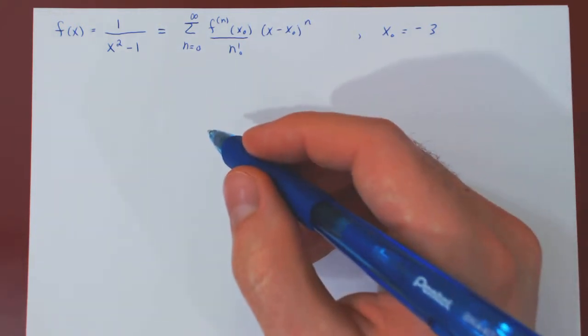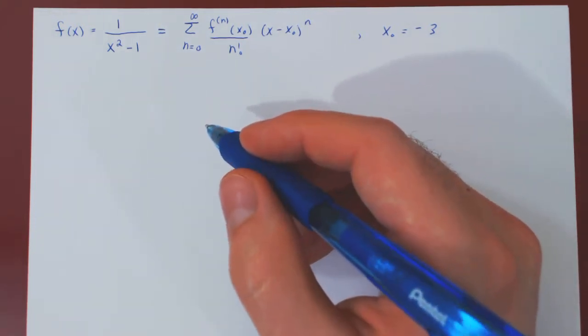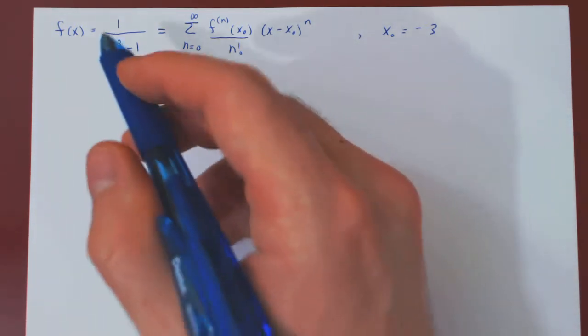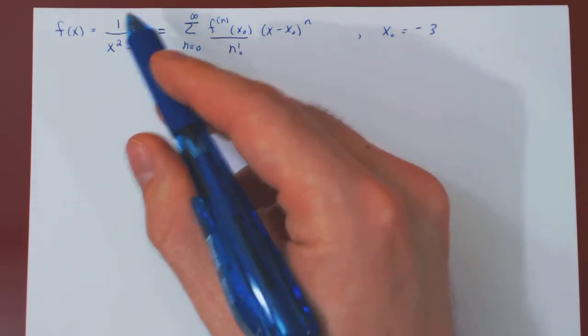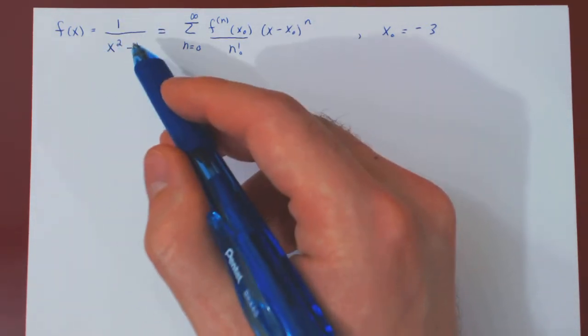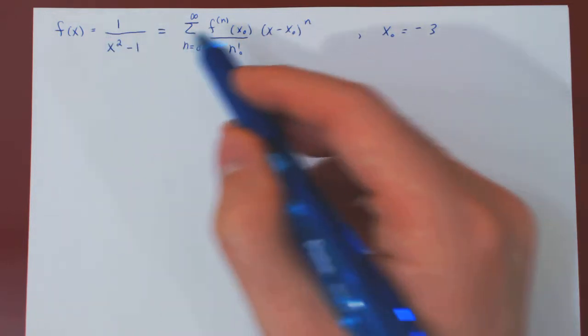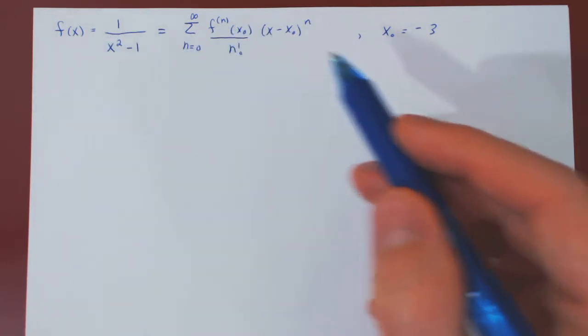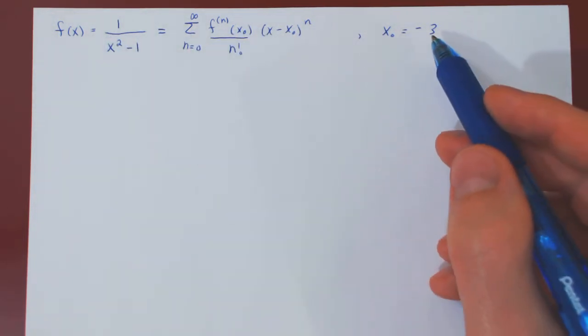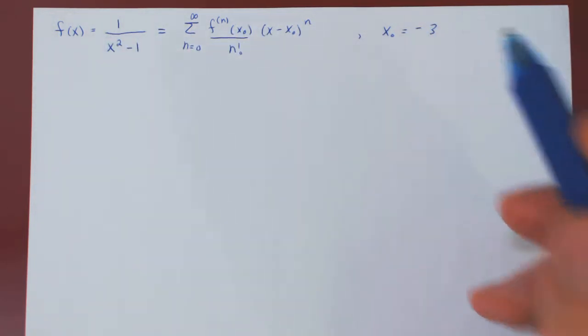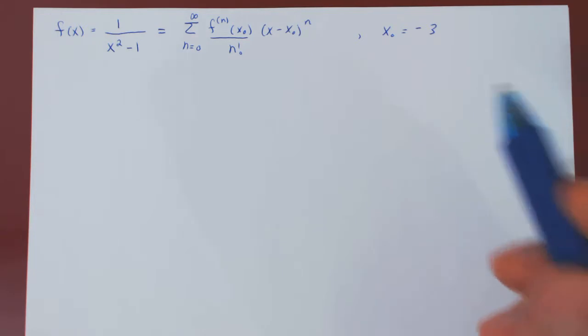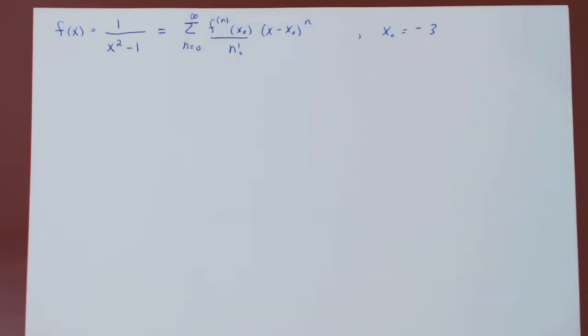You can try it out, but as I've just said, the higher derivatives get messy very quickly, and when you evaluate them at the center of the expansion, which here is negative 3, the pattern will not be so obvious.